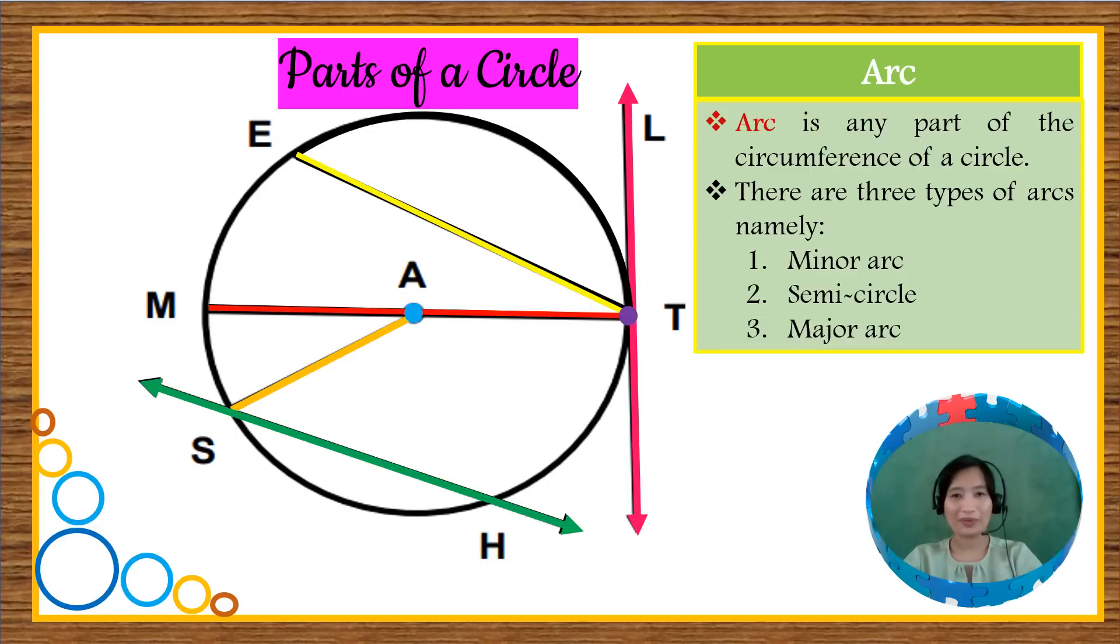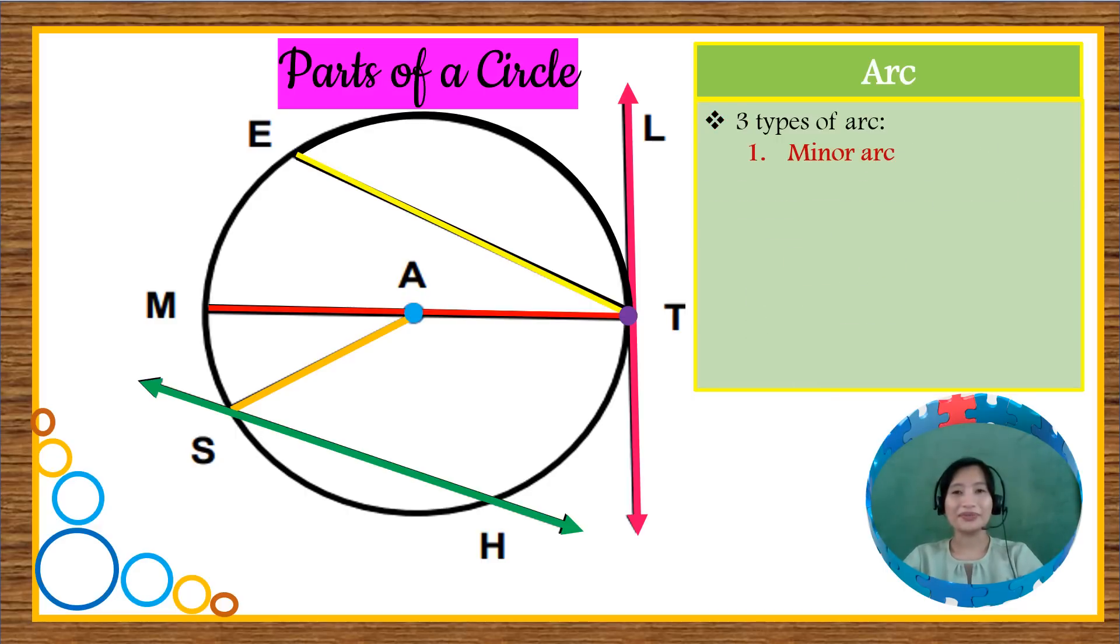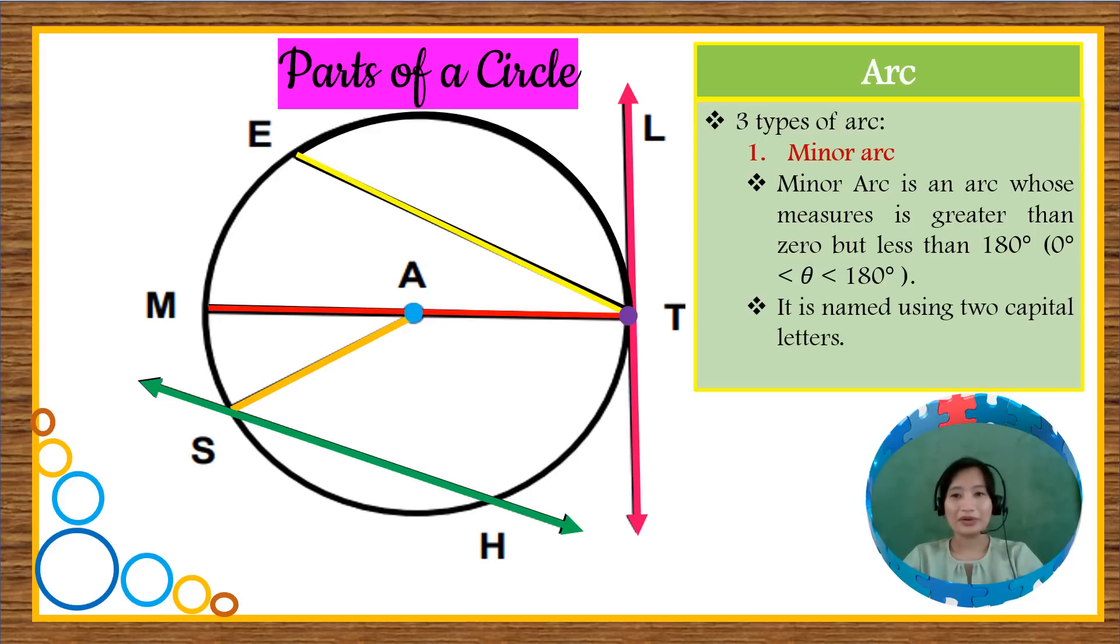Let us go over them one by one. The first type of arc is the minor arc. It is an arc whose measure is greater than zero, but less than 180 degrees. For example, or before that, it is named using two capital letters. An example of that is arc ET. So we use this symbol, arc, and then the points it passes through. So that is arc ET. It is a minor arc of circle A.